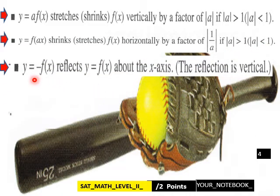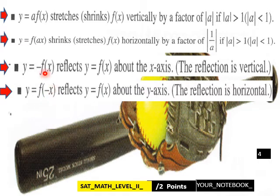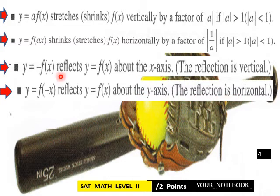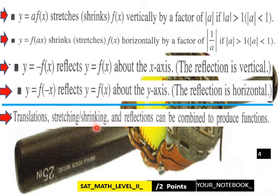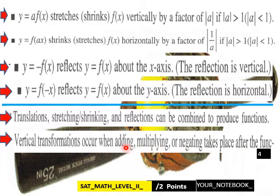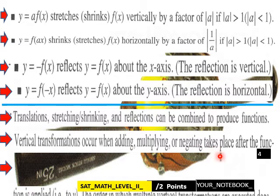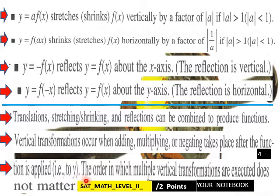y = −f(x) reflects y = f(x) about the x-axis — the reflection is vertical in this situation. And y = f(−x) reflects y = f(x) about the y-axis — the reflection is horizontal. Translations, stretching, shrinking, and reflections can be combined to produce functions. Vertical transformations occur when adding, multiplying, or negating takes place after the function is applied (to y), and the order in which multiple vertical transformations are executed does not matter.